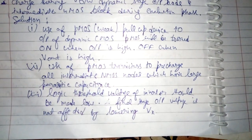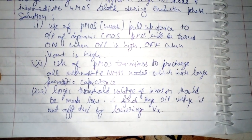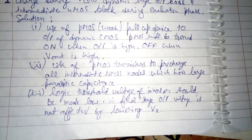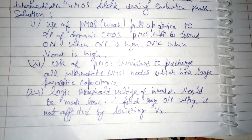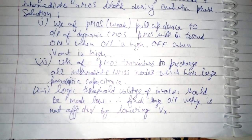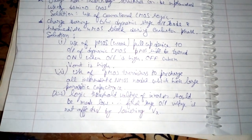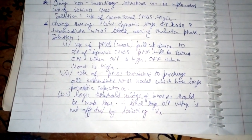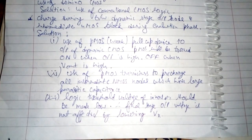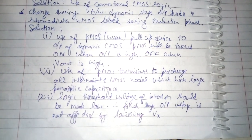The third solution to avoid the problem of charge sharing is to make the logic threshold voltage of the inverter low. If you make the logic threshold voltage low, then the final stage output voltage will not be affected by lowering Vx. If you lower Vx, it will not drop below the threshold voltage, so the problem will be solved.